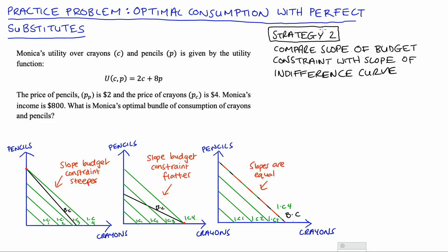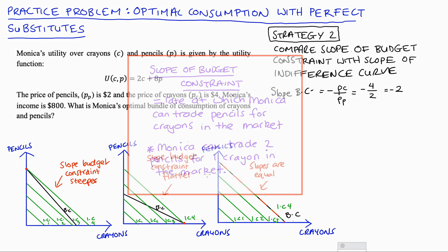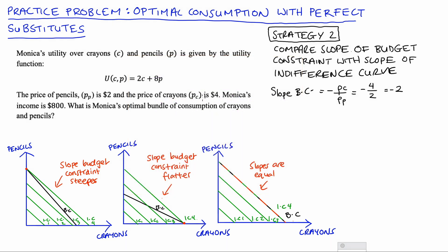Let's consider strategy two: compare the slope of Monica's budget constraint with the slope of her indifference curves. The slope of the budget constraint is the negative of the ratio of prices — the negative of the price of crayons over the price of pencils. The price of crayons is 4 and the price of pencils is 2, so the slope is negative 2. This represents the rate at which consumers can trade pencils for one crayon in the market — two pencils for one crayon.